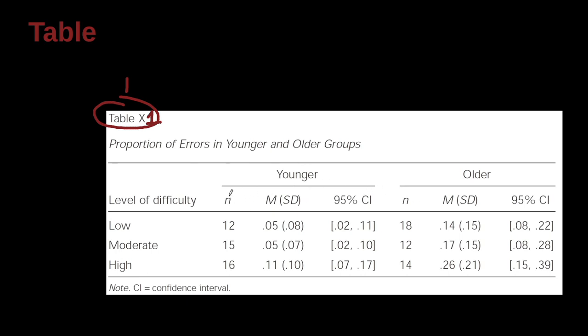So we have the n, lowercase n, which is the subgroup size, the M which is the mean, the standard deviation inside of parentheses. And then we have confidence intervals. And then down here we have low, moderate, and high inside of the body. And then we have a note down here, CI equals confidence interval.